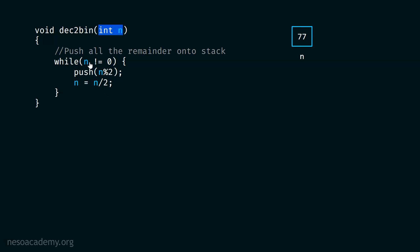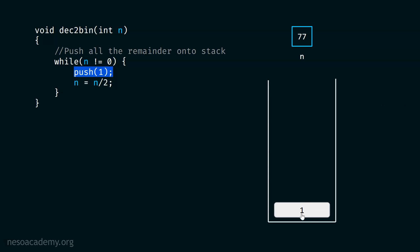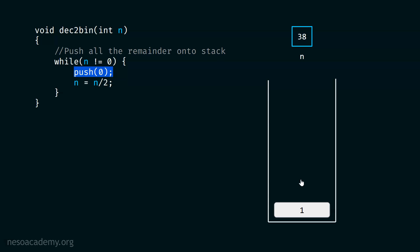Let's trace through the code step by step. n is 77, not 0, so we enter the while loop. n mod 2 gives 1, which we push onto the stack. Then n is updated to 38. n is not 0, so we continue — n mod 2 is 0 (38 is even), we push 0, and update n to 19. Again not 0 — we push n mod 2 which is 1, then update n to 9.